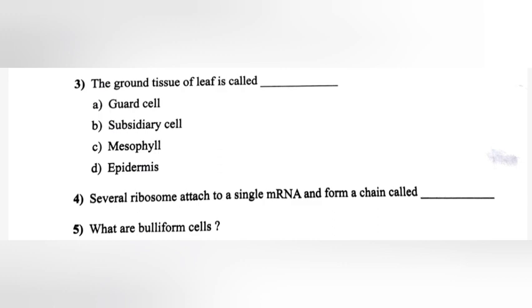Question 4: Several ribosomes attach to a single mRNA and form a chain called ___. Answer: Polysome or polyribosome.